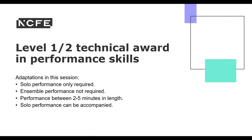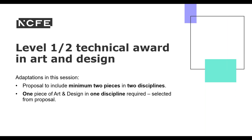For the art and design adaptations, the proposal created for the learner's piece still includes a minimum of two pieces in two disciplines as per previous sessions. However, in contrast to previous sessions, only one piece of art and design in one discipline is required, selected from the proposal, as opposed to the two pieces in two disciplines which would normally be required.